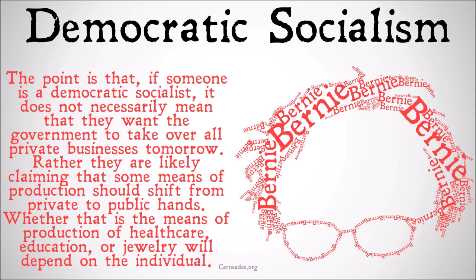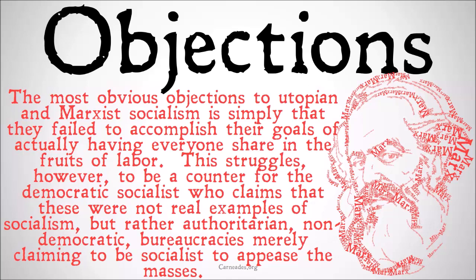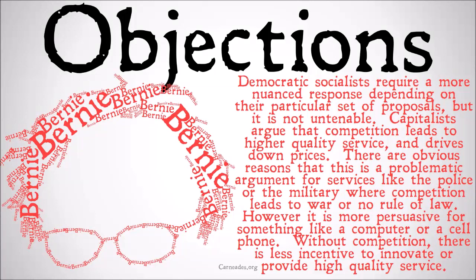The most obvious objection to utopian and Marxist socialism is simply that they failed to accomplish their goals of actually having everyone share in the fruits of labor. There are a range of other objections leveled against Marxist and utopian views of socialism. However, this struggles to counter the democratic socialist who claims these are not real examples of socialism, but rather authoritarian non-democratic bureaucracies merely claiming to be socialist in order to appease the masses.